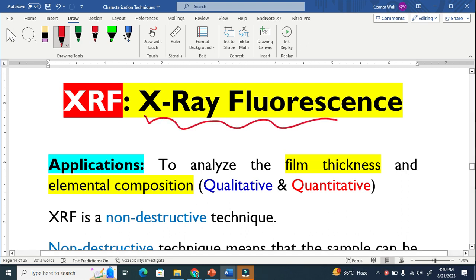X-ray fluorescence is another key characterization technique used to analyze the film thickness and elemental composition. We know that EDX is also used to analyze the sample composition, but XRF is a more advanced technique than EDX. It is used to analyze the sample composition.